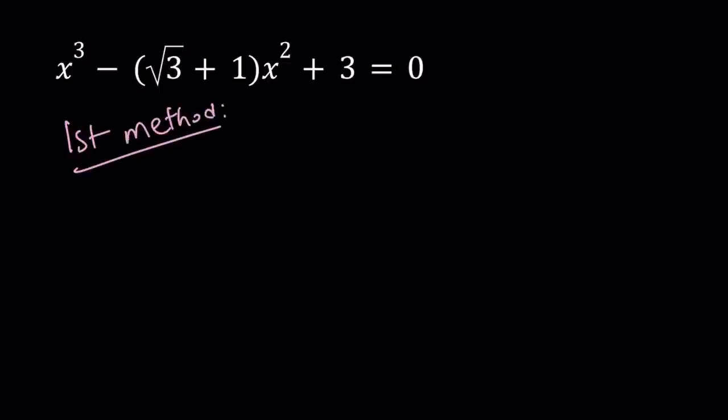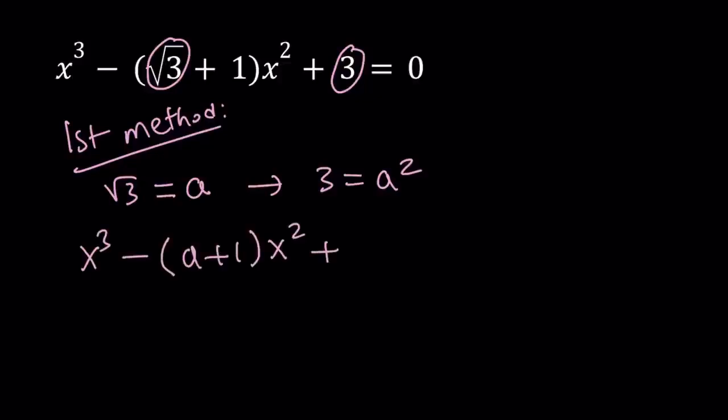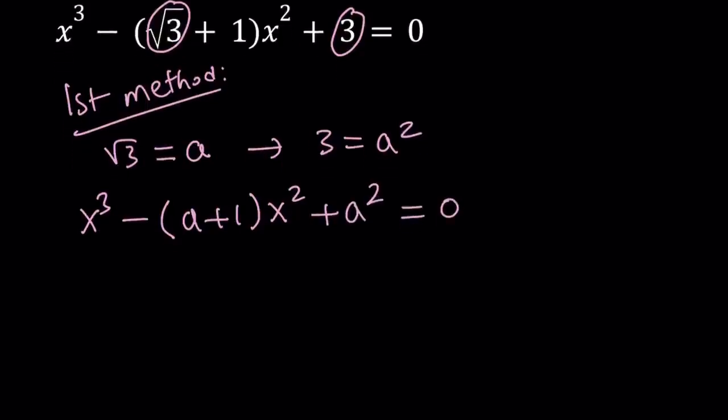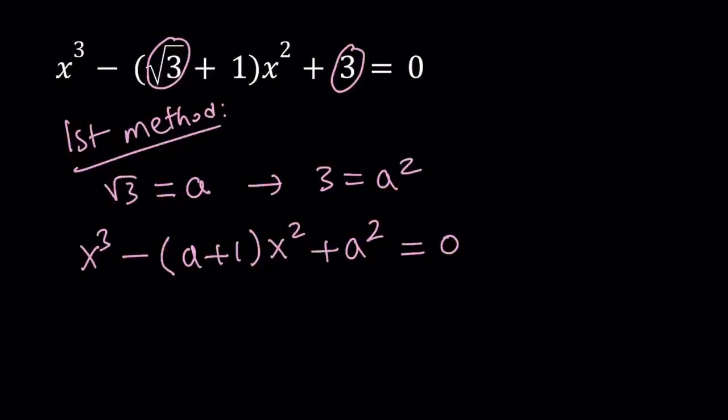For my first method, I'm going to make some substitutions. First of all, notice that we have the square root of 3 and 3. That tells me that I can just substitute square root of 3 and suppose it equals a. This implies that 3 can be written as a squared. Now that turns my equation into something called a parametric equation. Parametric equations are kind of fun to solve because for different a values you get different solutions, but this one has a particular value so we're going to back substitute at the end.